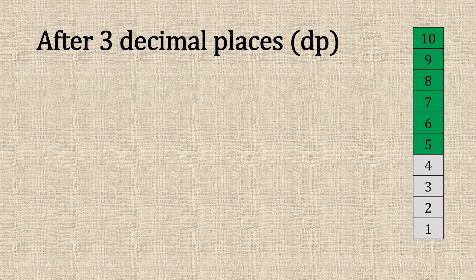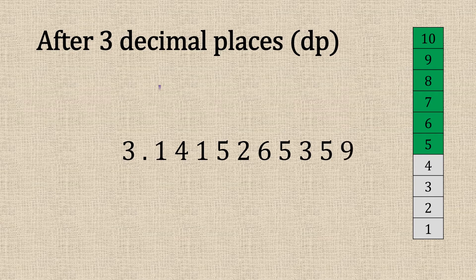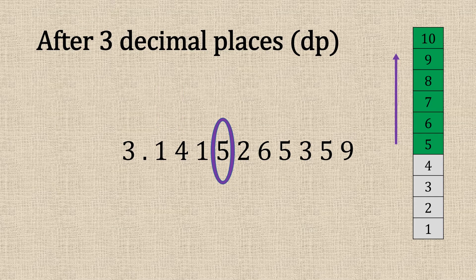After three decimal places. We've got one two three and the neighbour is five. It's a high five so we're going to round that up. So that will be three point one four two.